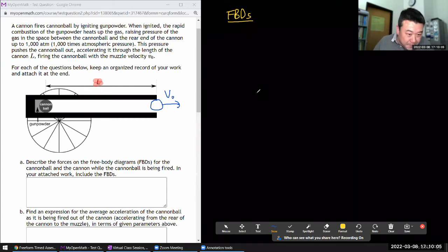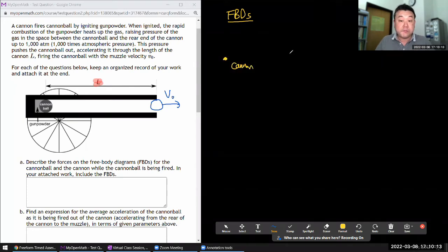I have free body diagram of the cannon, that's one body, and free body diagram of the ball, that's a second body. There's at least one force. There's the force that has accelerated the cannonball up to this point. This would be a force of cannon.